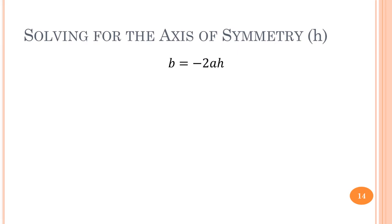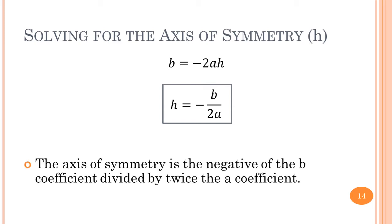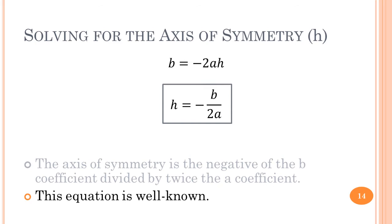Now let's solve for h using the equation for b to get the axis of symmetry. All we do is take the terms negative 2a and move them to the other side of the equation, giving us h equals negative b divided by 2a. This is the axis of symmetry — the negative of the b coefficient divided by twice the a coefficient. This is actually a well-known equation.